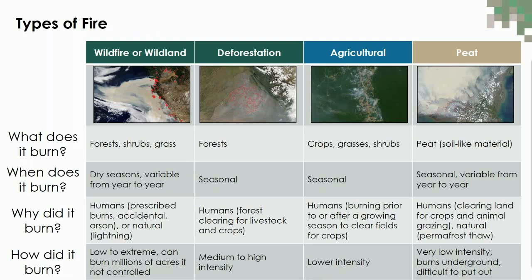Fires burn with different intensities and frequencies depending on the type and condition of their fuel, or what they're burning. Different regions have different fuels and usually a mix of different fuels, as well as different land use practices. Because of this, it's useful to distinguish between different fire regimes. We can distinguish between fire regimes by examining fuel types, the seasonality of when fires occur, what's causing the fires to ignite, and the intensity or how strong or hot the fire is.